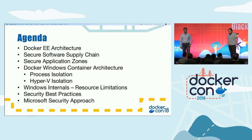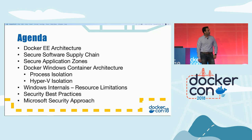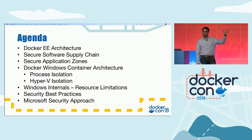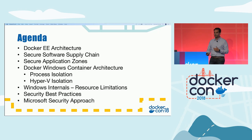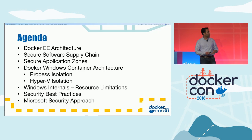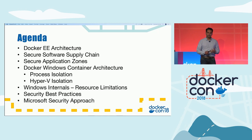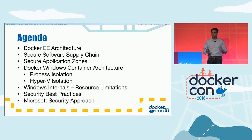Today we have a full agenda. We're going to talk largely about Windows containers and Windows container security. We'll start with a high-level picture and drill down into the details. We'll cover Docker EE architecture and how Docker EE helps you secure your software supply chain and how Docker provides security once containers are deployed in production. Then Surhan will cover Windows container architecture, process isolation, Hyper-V isolation, and Windows internals. We'll also cover security best practices and Microsoft security approaches.